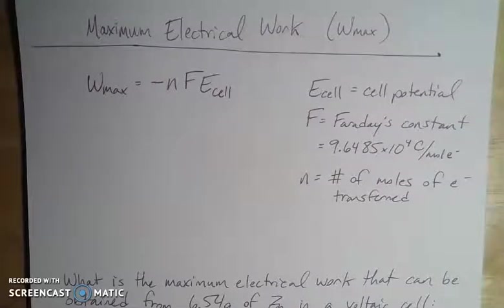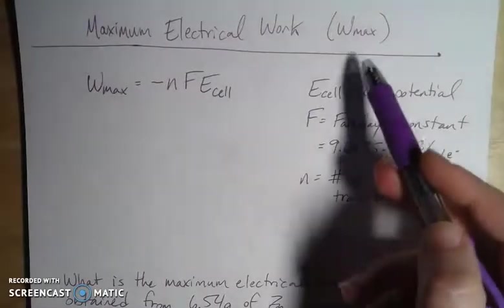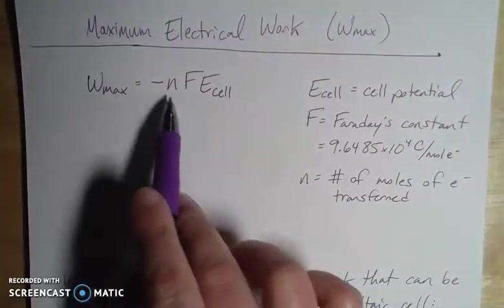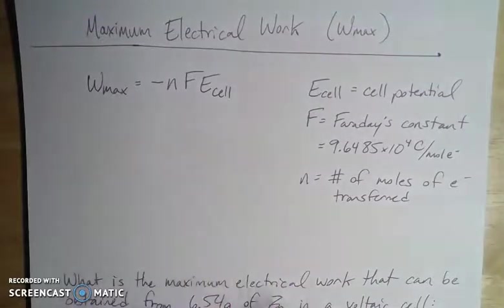Okay, we've been talking about voltaic cells and the potential difference that we can get between these two electrodes and then how we can utilize that potential difference to do something, to do work. If we wanted to figure out how much work we can do, the maximum amount of work that we can do, the W max here, then that is going to be equal to the negative nFE_cell.